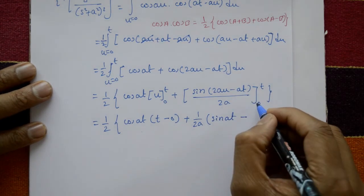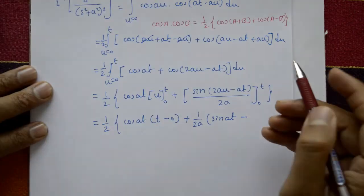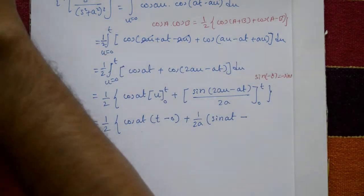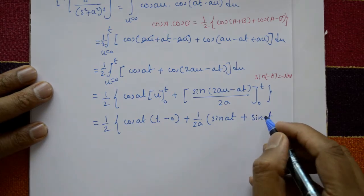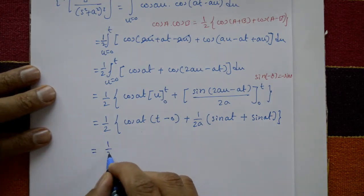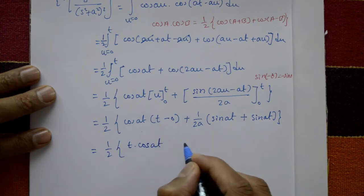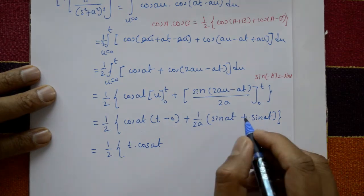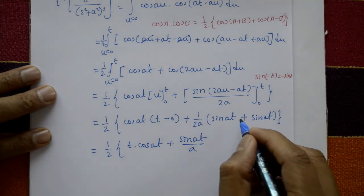At the lower limit u = 0, sin(2a·0 − at) = sin(−at) = −sin(at). So minus (−sin(at)) gives +sin(at). After simplification: (1/2)[t·cos(at)] + sin(at)/(2a), and the factor of 2 cancels to leave sin(at)/a.